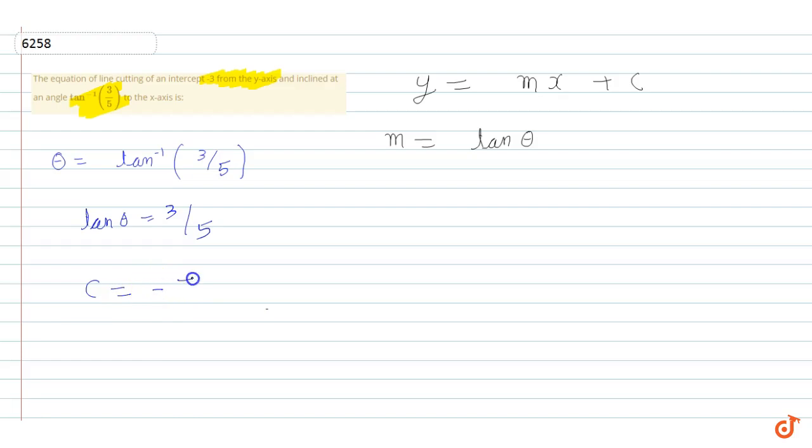So, now the equation of line is y is equal to m is what? 3 by 5. So, m is 3 by 5x plus c is equal to minus 3. Now, the equation is equal to 5y minus 3x plus 15 is equal to 0.